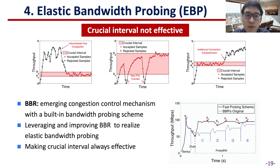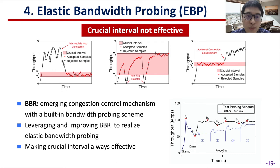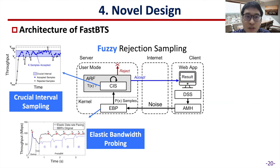When putting crucial interval sampling into actual use, we find that crucial intervals may sometimes be ineffective. Therefore, we learn from BBR, an emerging congestion control mechanism with a built-in bandwidth probing scheme. We leverage and improve BBR to realize elastic bandwidth probing, which makes crucial intervals almost always effective. This is the architecture of FastBTS, which realizes fuzzy rejection sampling with crucial interval sampling and elastic bandwidth probing.